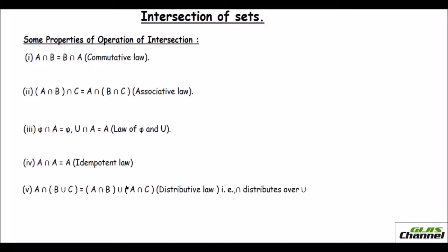Here you distribute the intersection value — the intersection is distributed over the union. It is like when we have 2 times (3 + 5), we do 2×3 + 2×5. You are distributing the 2 over the numbers. Same way, the intersection is distributed over the union.